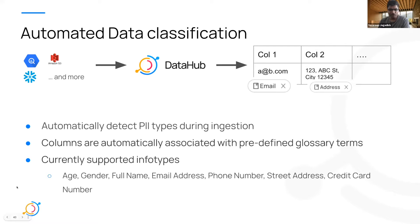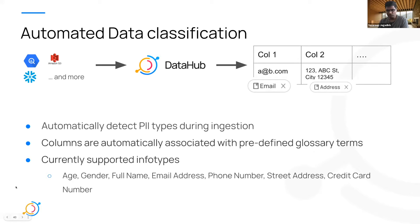Coming very soon, our connectors for SQL sources and S3 data lake will automatically detect PII types during ingestion. Columns will be associated with predefined glossary terms. In the first version, we'll support info types like age, gender, and other info types listed here. And we'll continuously add support for more info types.